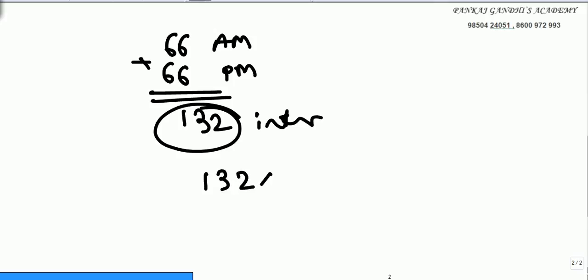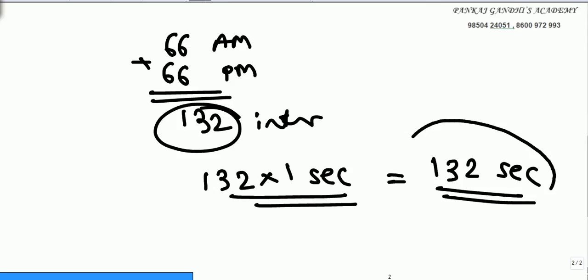Each interval is of 1 second. So total 132 seconds. That's the time needed by the clock to strike the whole day, making all the gongs throughout the day.